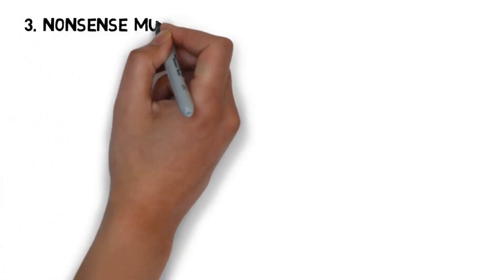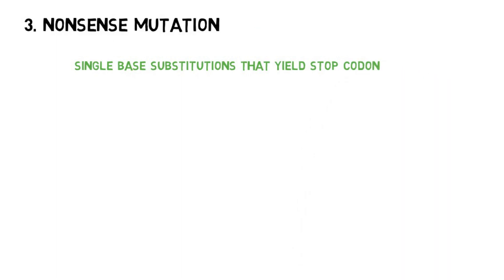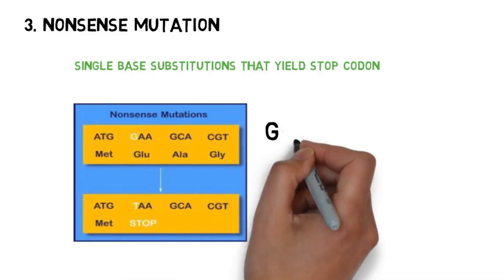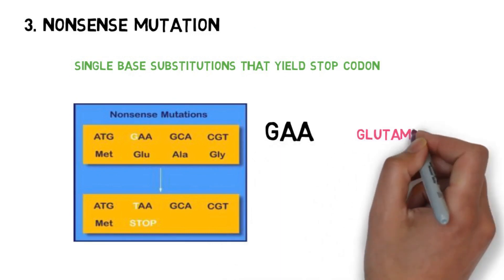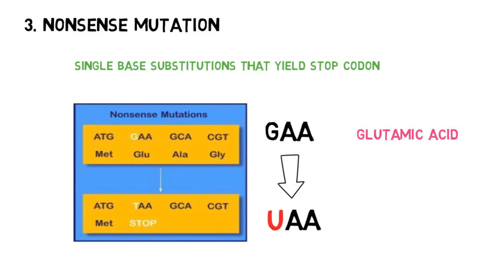Now we see the third type: nonsense mutation. In nonsense mutation, a single base substitution yields a stop codon. That means the changed codon will code for a stop codon. As shown in this image, the original codon was GAA, which coded for glutamic acid. It gets changed to UAA, which codes for a stop codon. Because of this, we get a nonsense mutation. So that was nonsense mutation.